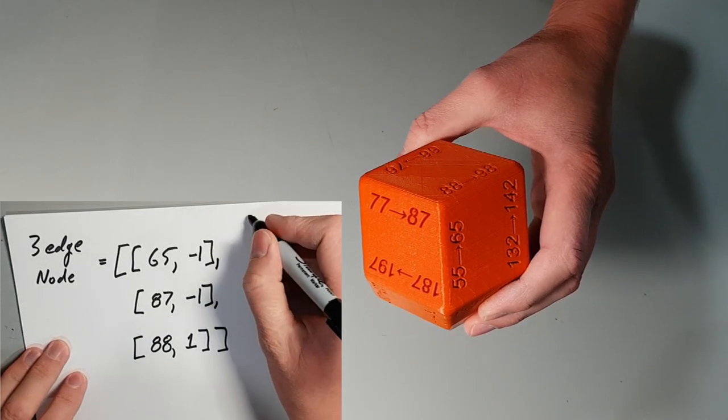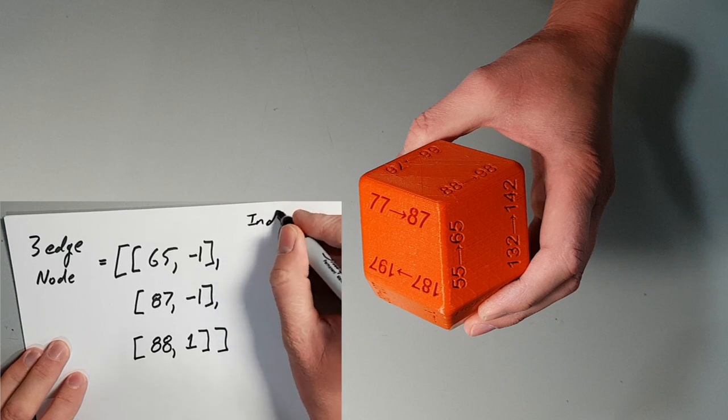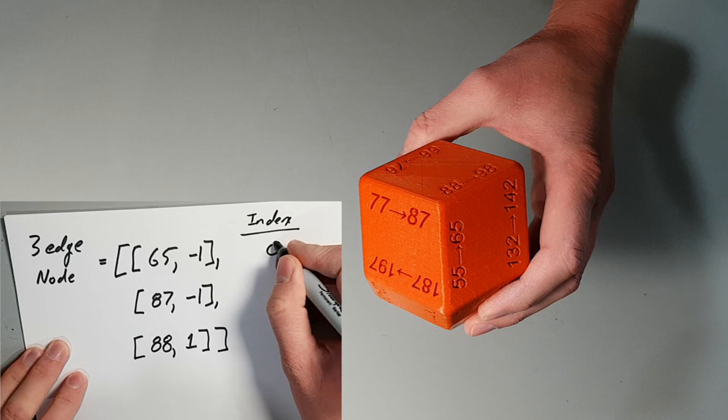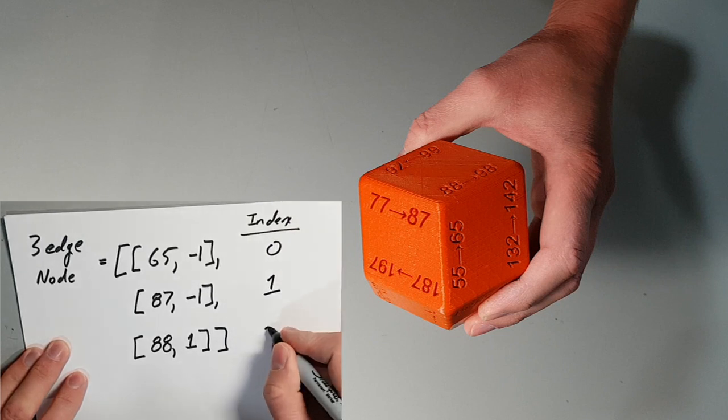Now that we have this array, we can traverse through the node. In this array, 87 has an index 1, since the first index is 0. So, to turn right, we decrease the index by 1, obtaining 0, and thus going to LED 65.